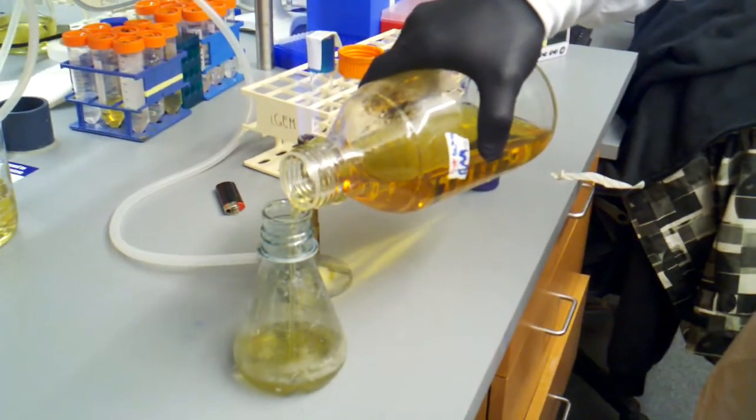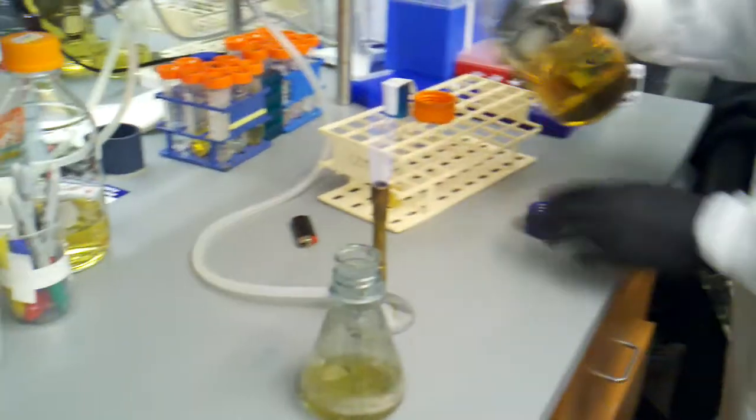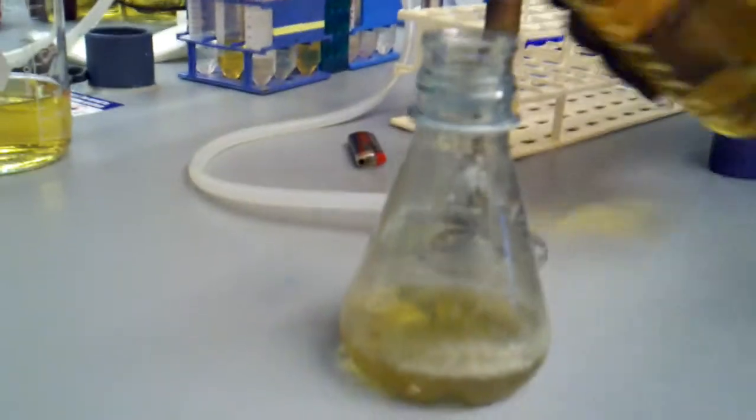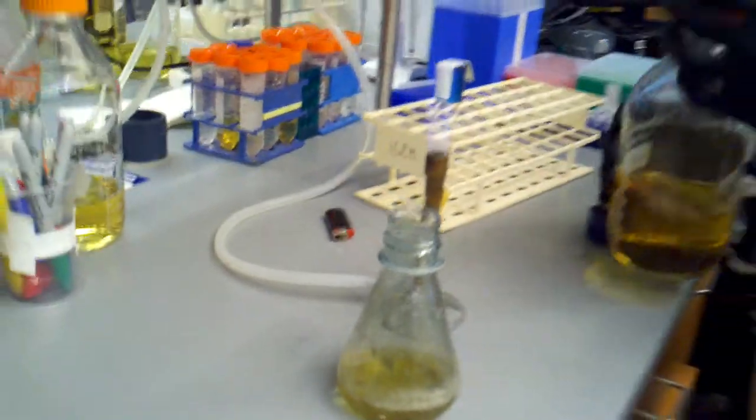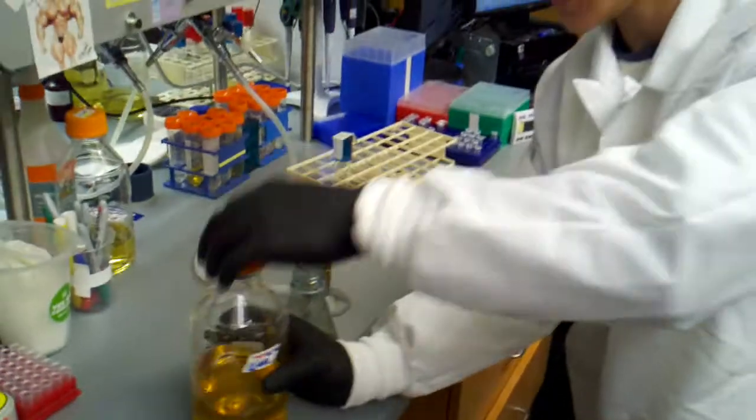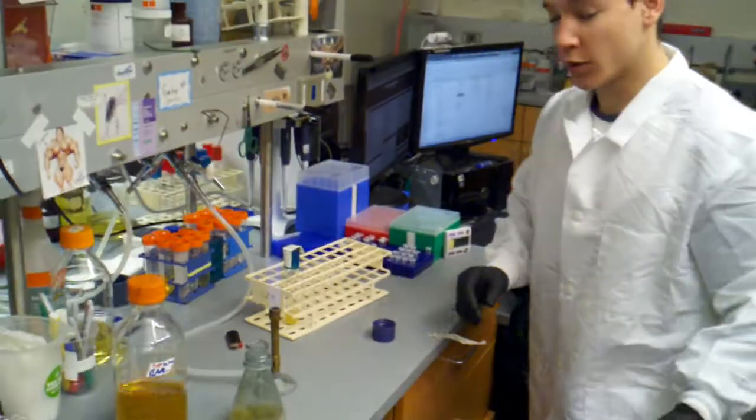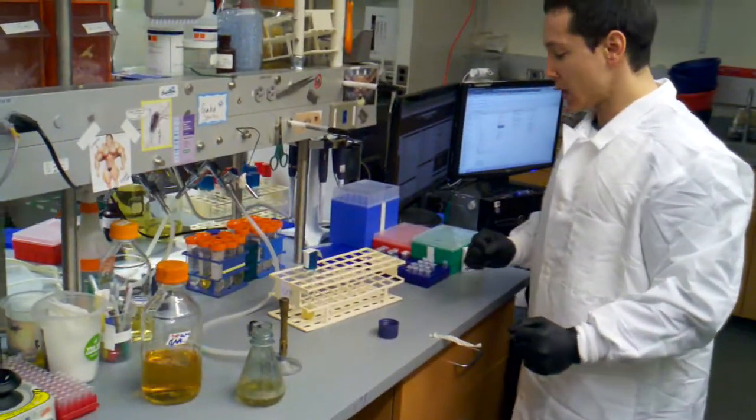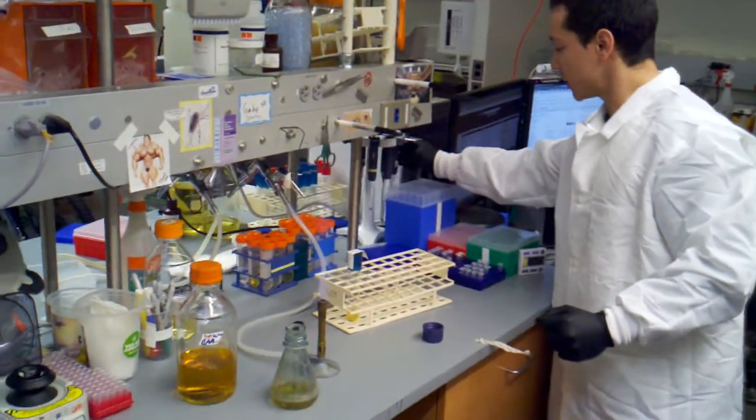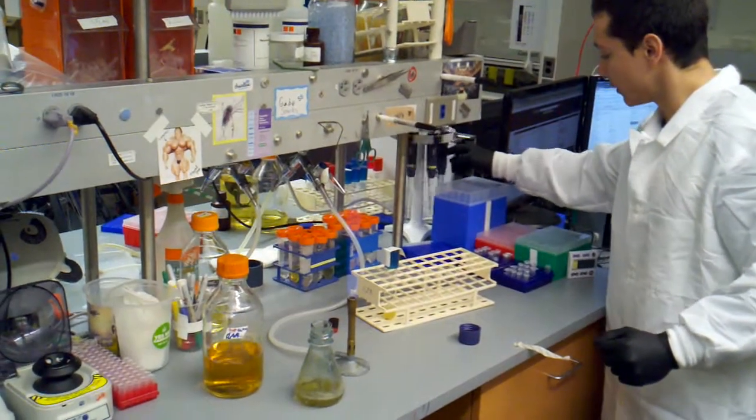Pull it up. That's about 50 mils. If you want to get more accurate, you can just grab a falcon tube. Those are 50 mils, and you can just add your media to your falcon tube. We're going to do a 1 to 25 dilution, so 50 mils is going to get us 2 mils for a 1 to 25 dilution.